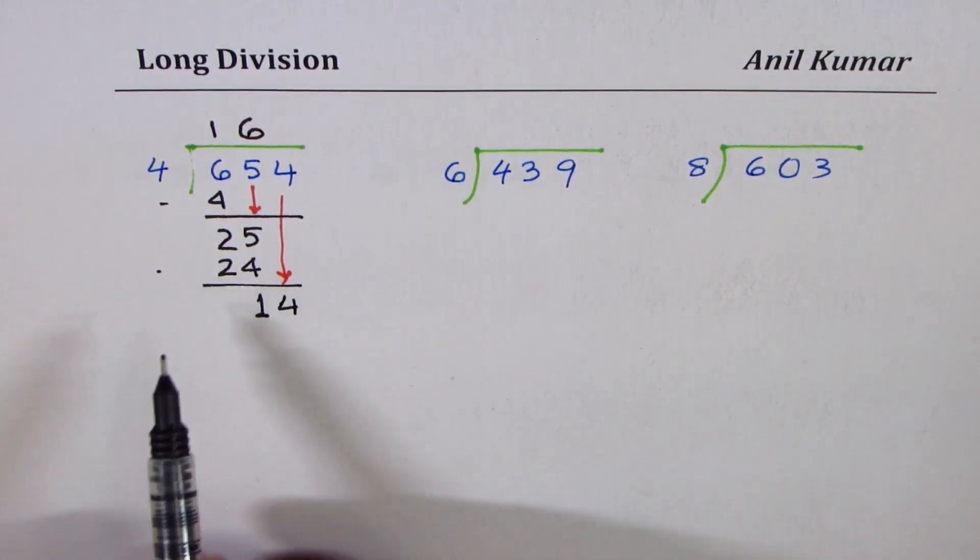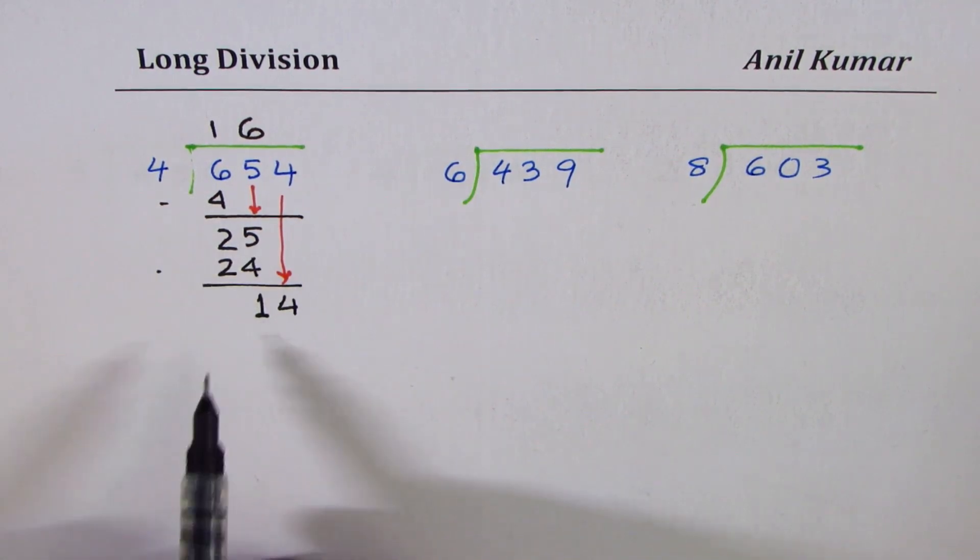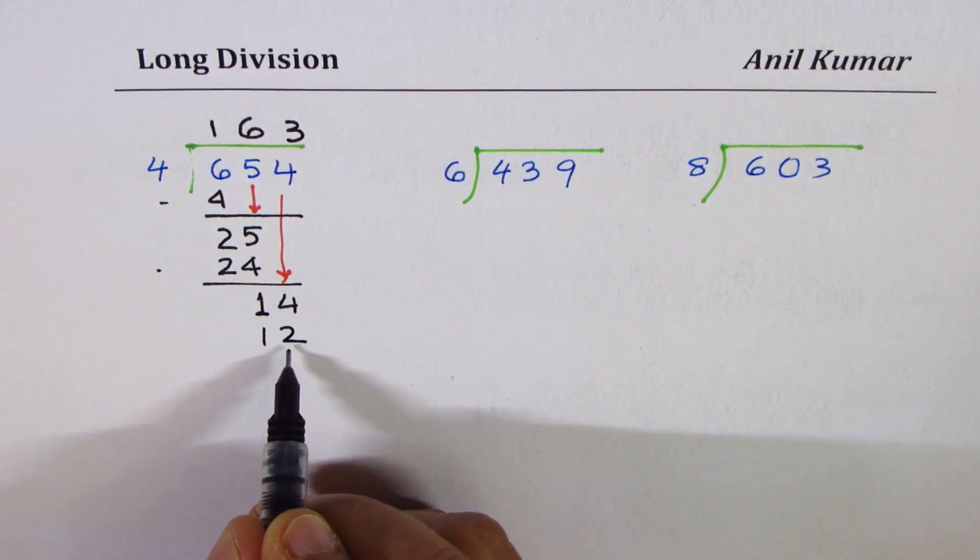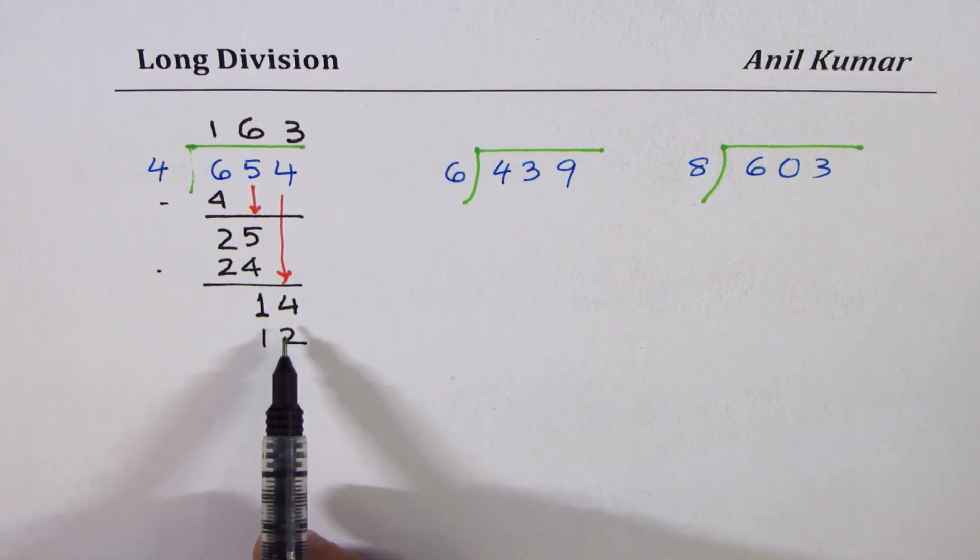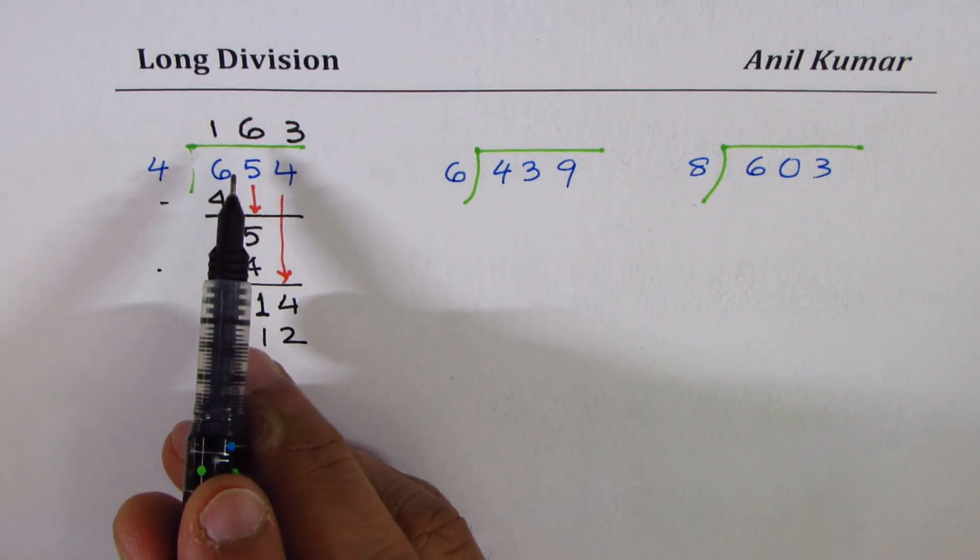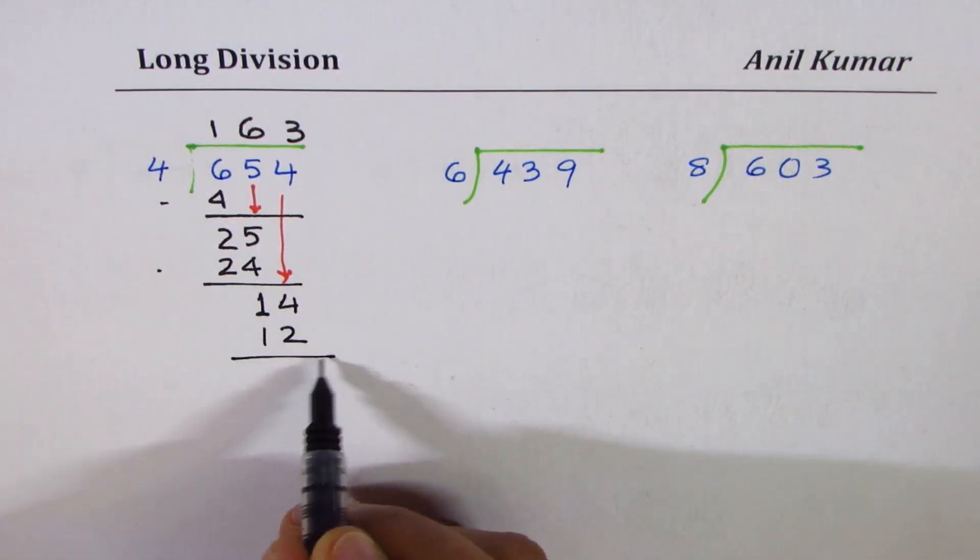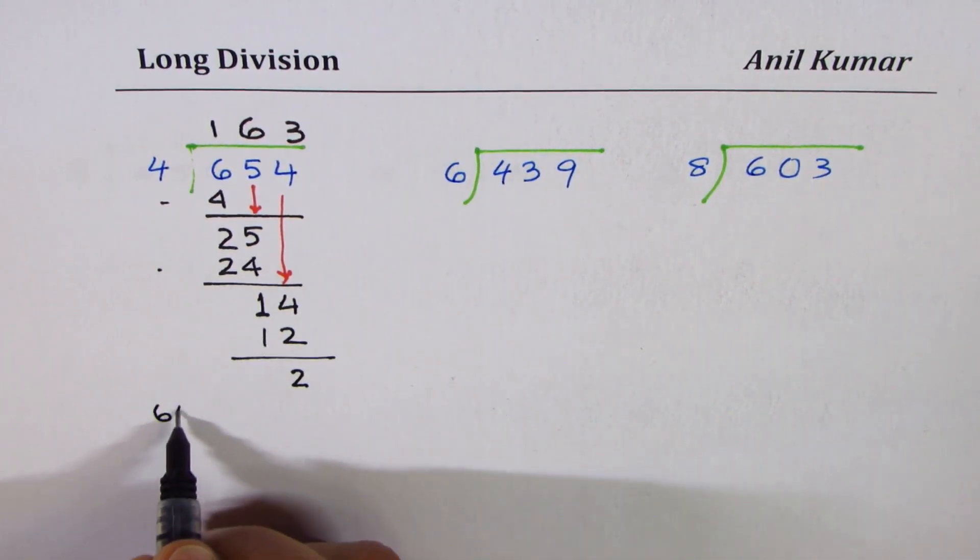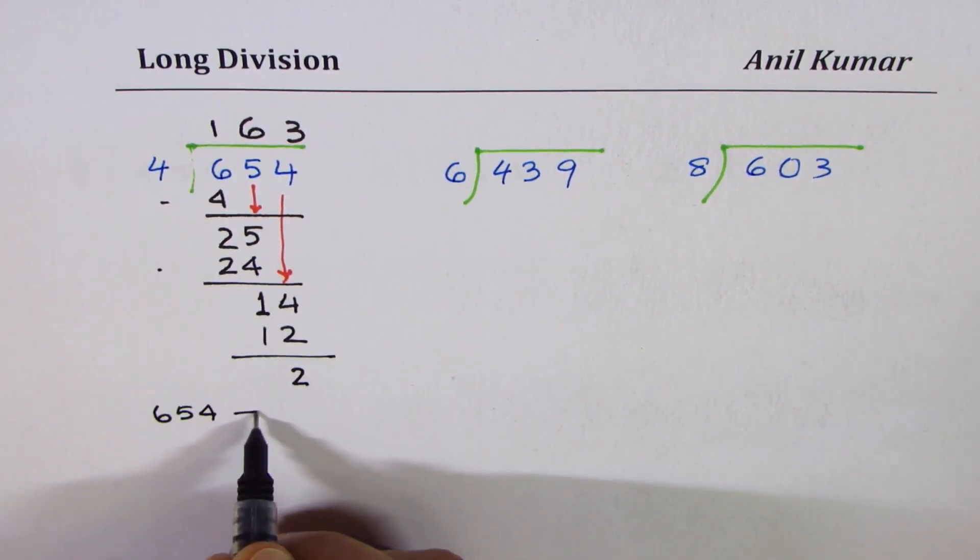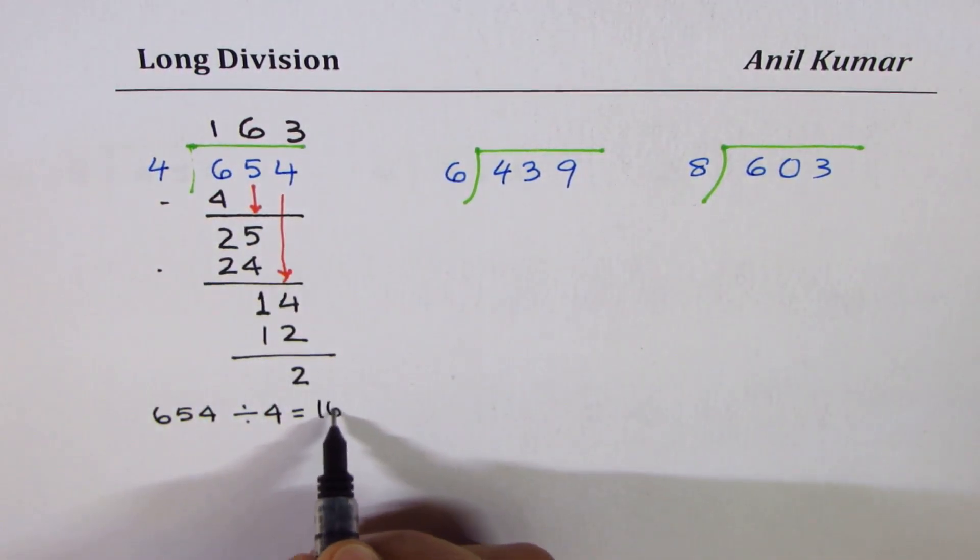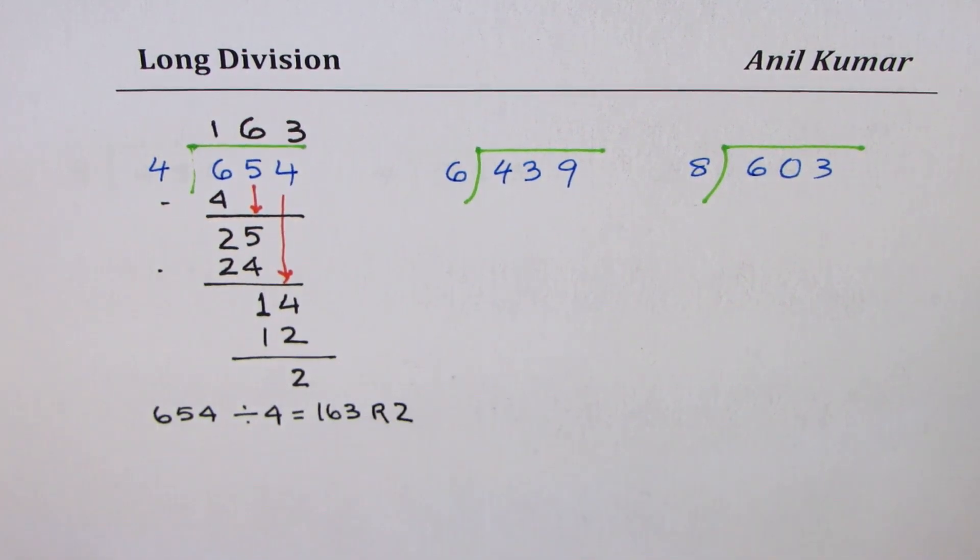Repeat this step. Divide 14 by 4. 4 times 3 is 12. We have to put a number which is smaller but closest. 4 times 4 will be 16, which is higher. So that is maximum which can be placed in the quotient. What we get here is a remainder of 2. So now we can write that 654 divided by 4 is equal to 163 remainder 2.